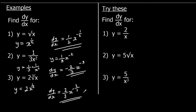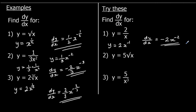So there are three for you to try — pause the video and give these ones a go. Question one can be rewritten as y equals two x to the power of negative one, since one over x is the same as x to the power of negative one. Now we can differentiate: times by the power, negative one times two is negative two, and take one off the power — negative one take away one is negative two.